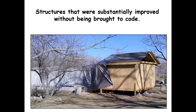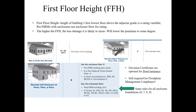Substantial improvements: structures that are improved without being brought to code. We had a manufactured home worth about $500 where any $250 improvement would be a substantial improvement requiring it to be brought into code — and this particular one was definitely not in compliance. We have to track substantial improvement on our permit forms; that should definitely be a line on the form.